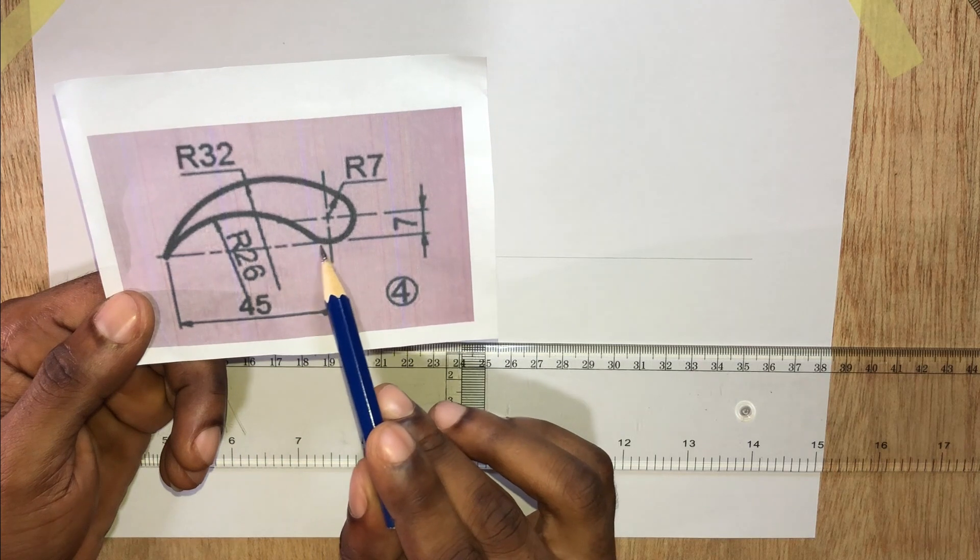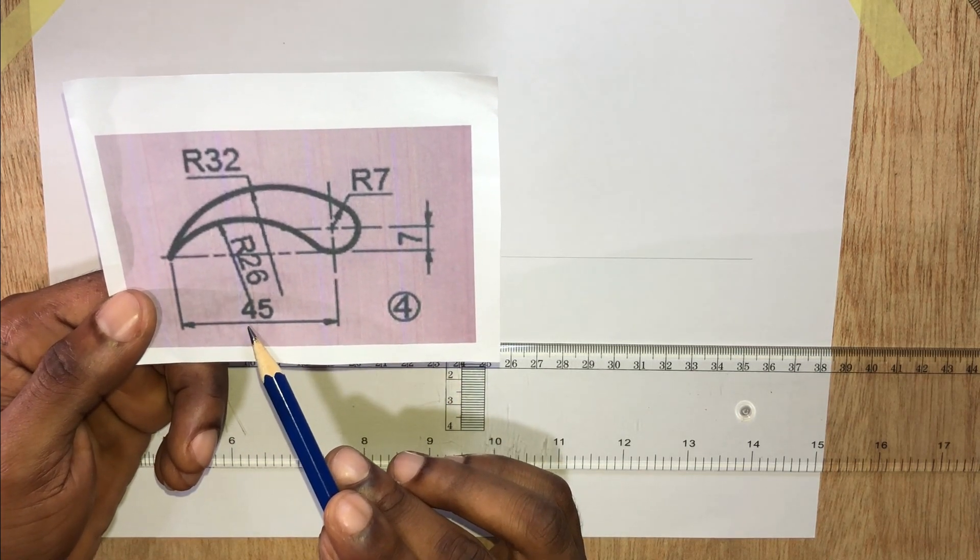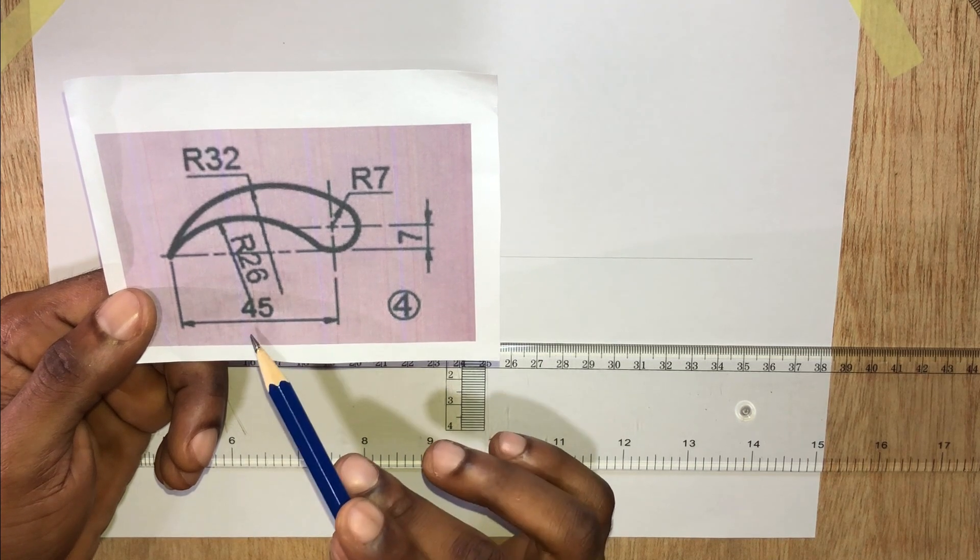We have this horizontal distance to be 45 millimeters, which is the same as 4.5 centimeters.